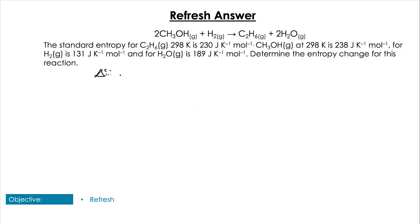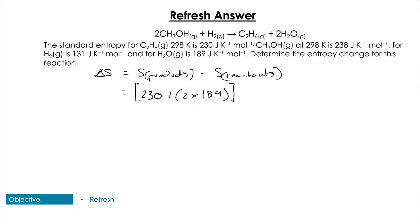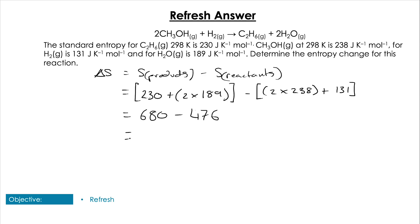Hopefully for this question you remembered that the entropy change is going to be the entropy of the products minus the reactants, and they give us those values in the question. So we're going to do 230 plus 2 times 189 for the products, and then 2 times 238 plus 131 for the reactants. Resolving that gives 608 minus 476, which equals 204 joules per kelvin per mole.